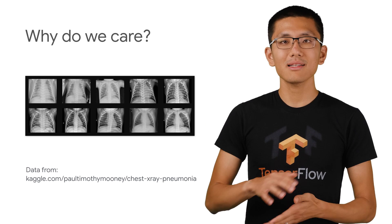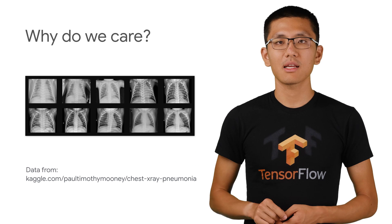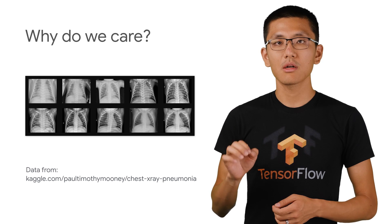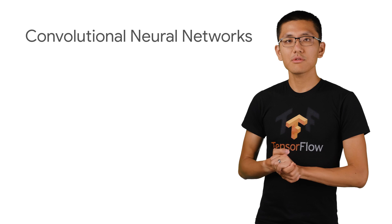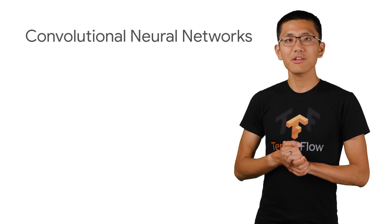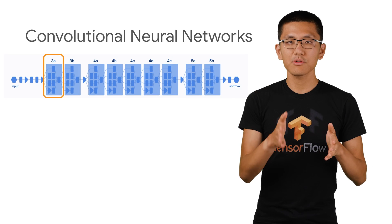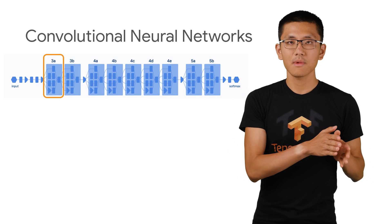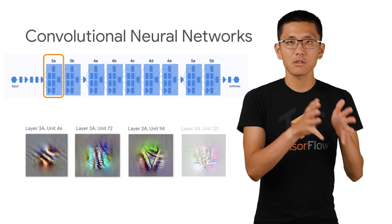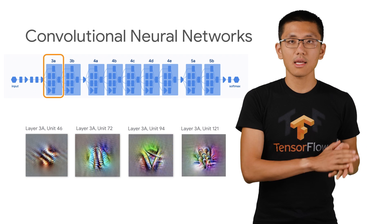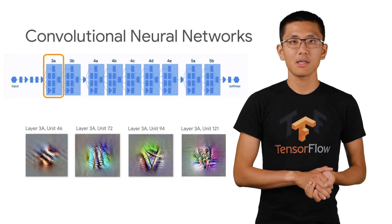Well, let's set the stage by first understanding the structure of a convolutional neural network. Convolutional neural networks get their name from their many convolutional layers, and they work in concert to understand the different details of an image.